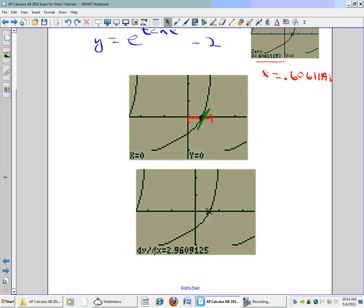And so the derivative, dy dx, will equal 2.9609. And it keeps going. And we want to round it to three decimal places. So I see that it's going to go to 2.961.